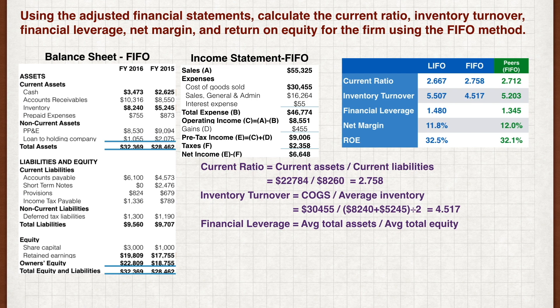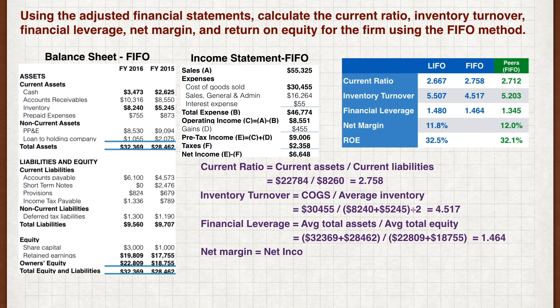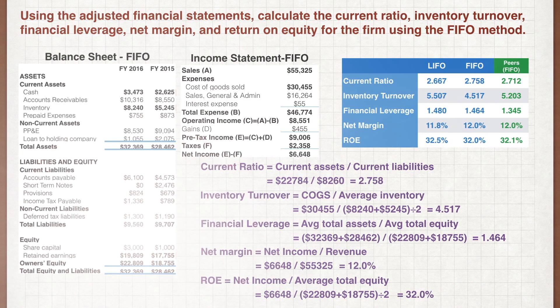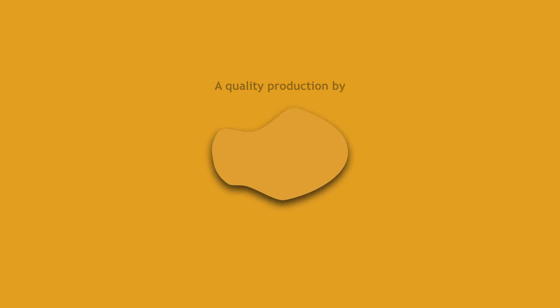Financial leverage is the average total assets divided by the average total equity. Plugging in the figures, we get a ratio of 1.464. Net margin is the net income divided by the revenue. Plug in the figures and we get 12%. And the return on equity is the net income divided by the average total equity. Remember to use the average figure, which is the beginning equity plus ending equity divided by 2. The ROE is 32%.